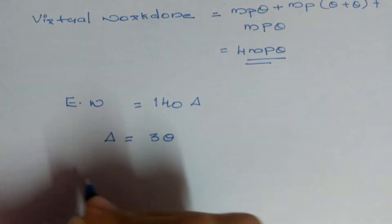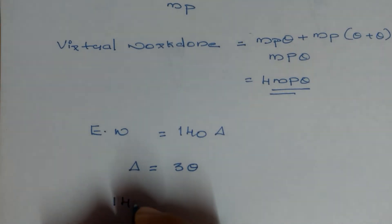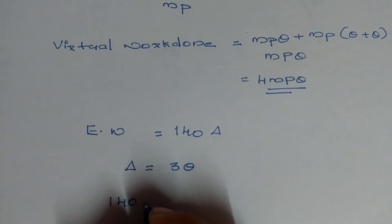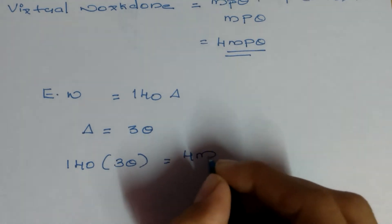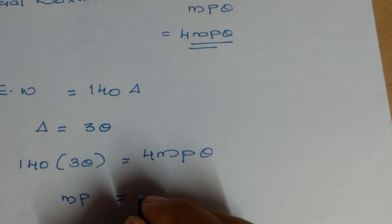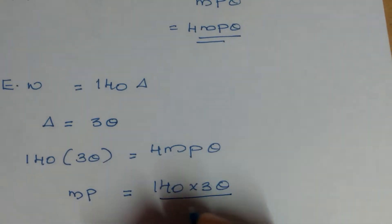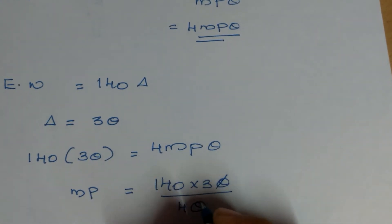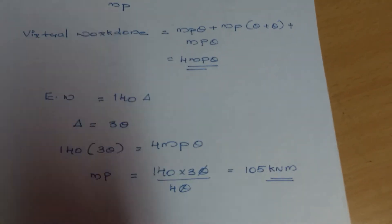Equating virtual work done to external work done: 140 × 3θ = 4MP·θ. Theta cancels, giving MP = (140 × 3) / 4 = 105 kN·m. This completes the beam mechanism analysis.